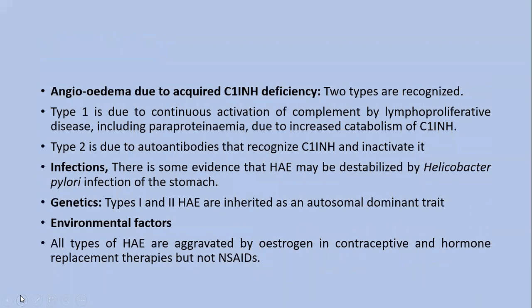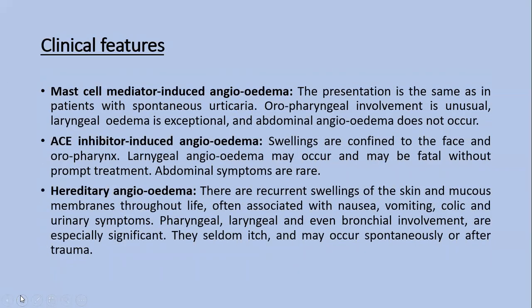Acquired C1 inhibitor deficiency has two types: Type 1 is due to continuous complement activation by lymphoproliferative disease inducing paraproteinemia, causing increased catabolism of C1 inhibitor. Type 2 is due to autoantibodies that recognize and inactivate C1 inhibitor. There is evidence that hereditary angioedema may be destabilized by Helicobacter pylori infection. Types 1 and 2 hereditary angioedema are inherited as autosomal dominant traits. All types are aggravated by estrogen in contraceptives and hormone replacement therapy, but not by NSAIDs.